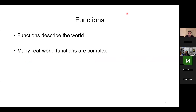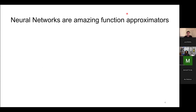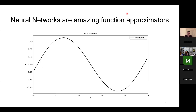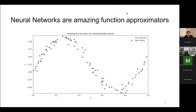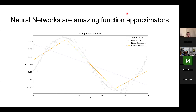Functions describe the world around us, and many real-world functions that are of interest to us may be very complex to model with just equations and parameters. We tend to use predictive models to approximate these complex functions and make accurate predictions, sometimes even to understand the underlying mechanism. Here I have a simple nonlinear function. If we train a linear regressor on this dataset, it would not do a good job at predicting. But if we use a neural network and do a decent job, it will start approximating the function.